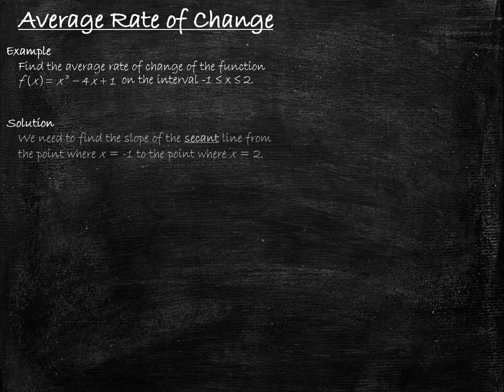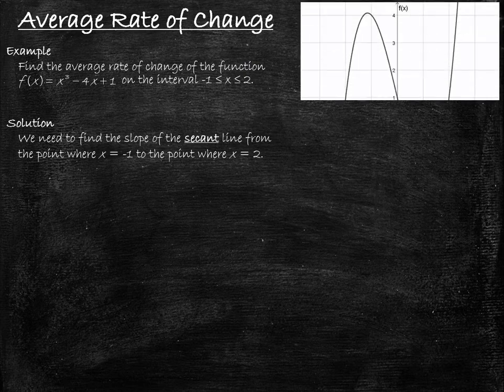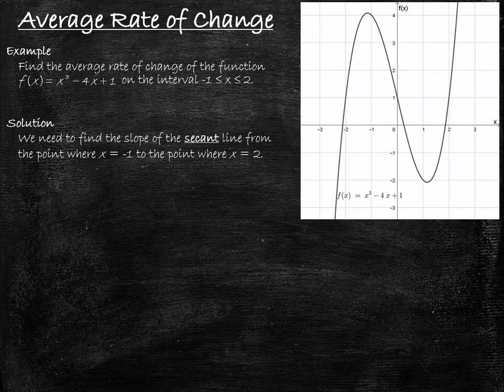In this question we are being asked to find the slope of the secant line from the point where x equals negative 1 to the point where x equals 2. Here's the graph of our function f(x) = x³ − 4x + 1. If we look up from an x value of negative 1, we see the corresponding point on the graph has a y value of 4. Similarly, if we look up from an x value of 2, we see that the corresponding point on the graph has a y value of 1.